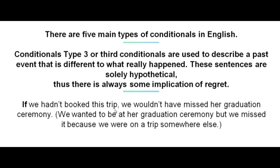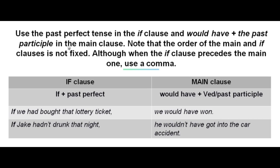For example: If we hadn't booked this trip, we wouldn't have missed her graduation ceremony. This means that we wanted to be at her graduation ceremony, but we missed it because we were on a trip somewhere else. Make sure to use the past perfect tense in the if clause and would have plus the past participle in the main clause.